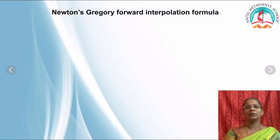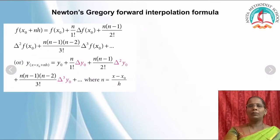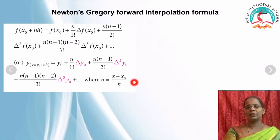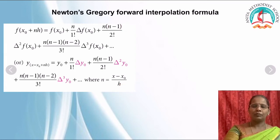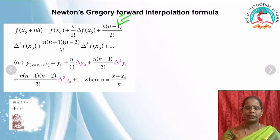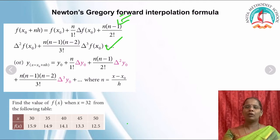Now moving to Chapter 5. You are studying three formulas: forward interpolation, backward interpolation, and Lagrange's interpolation. The forward interpolation formula is a big expression — learn it. The formula for n is (x - x₀)/h, where x₀ is the first observation in x and h is the equal interval. This formula can only be used when the data is equally spaced.